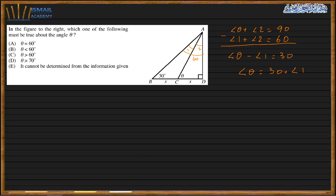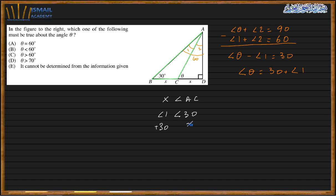Looking at that triangle, x is less than AC. The opposite angle to x is less than the opposite angle to AC, so angle one is less than 30°. Adding 30° to both sides: angle one + 30° < 60°. Since theta = angle one + 30°, we get theta < 60°.